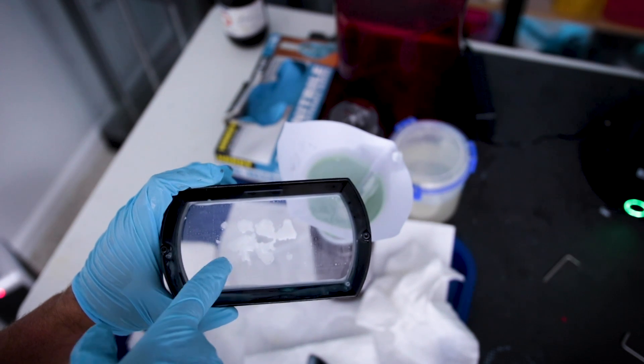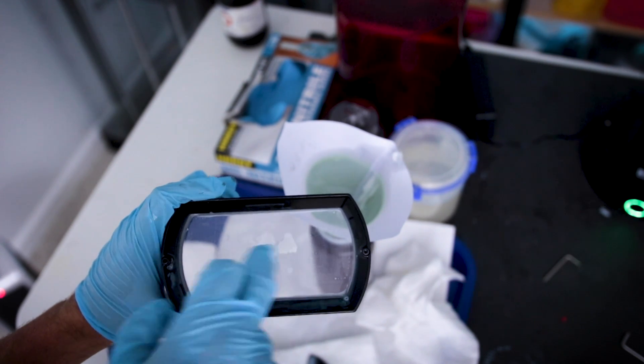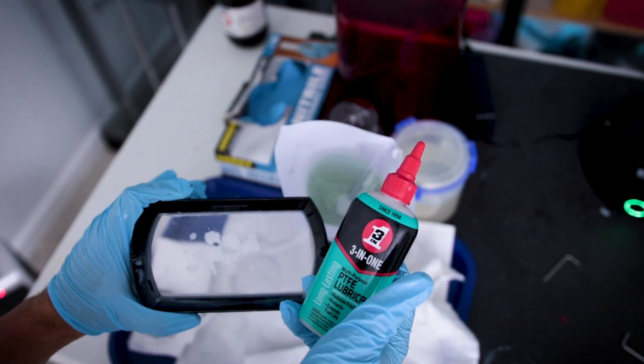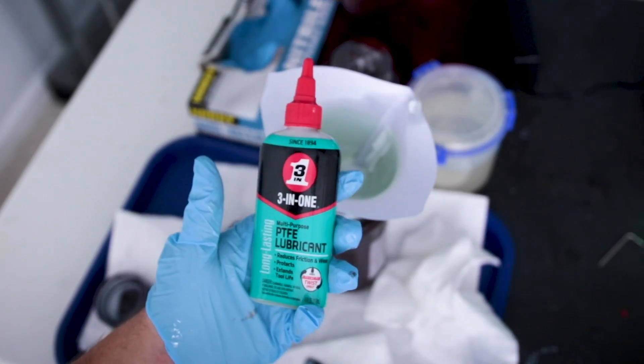If you're having a problem with resin sticking to the vat inside your resin printer, you should give this 3-in-1 PTFE lubricant a try. I heard about this stuff over on one of the Facebook groups and it seems to work really well.